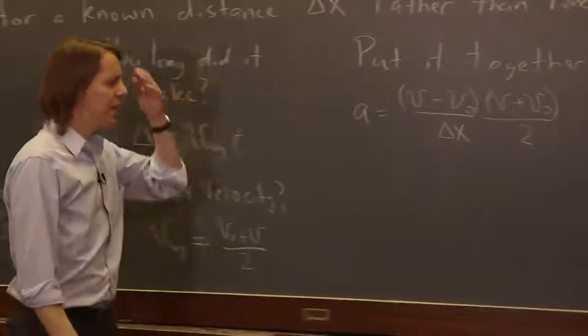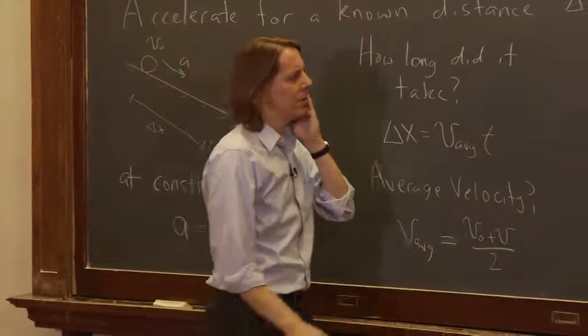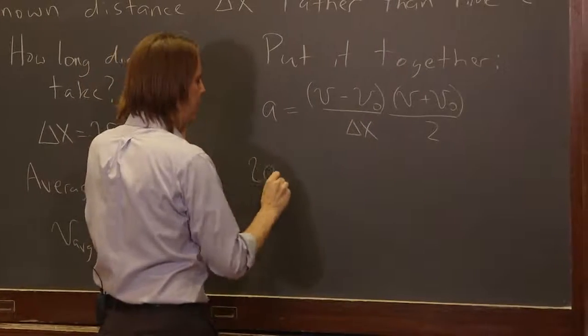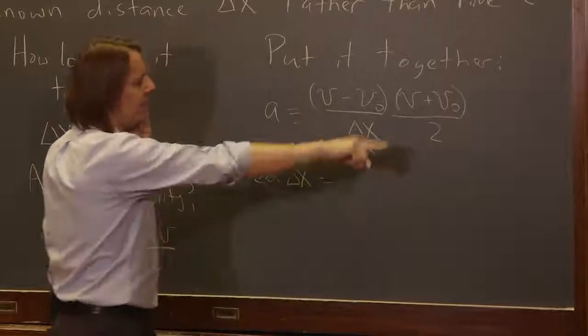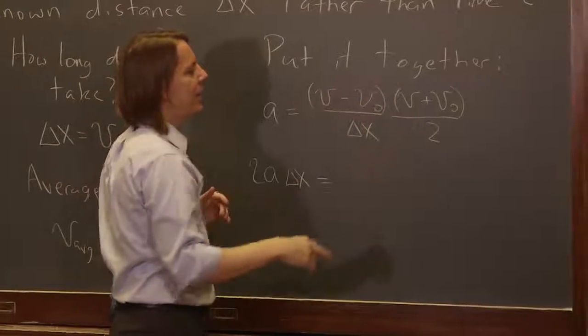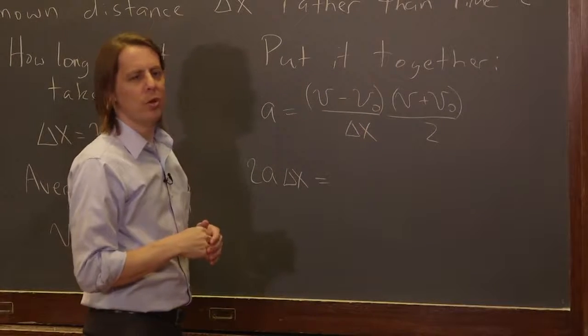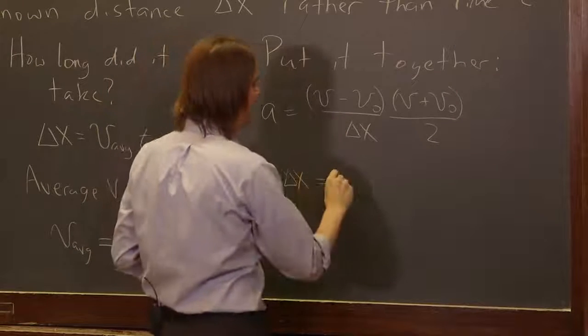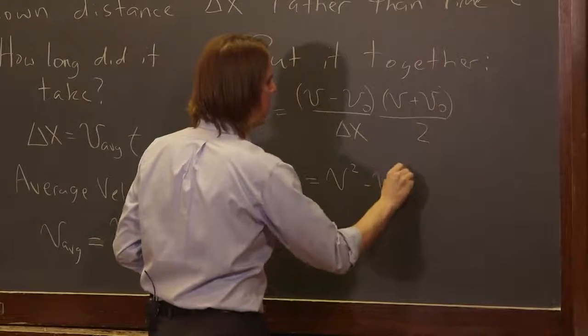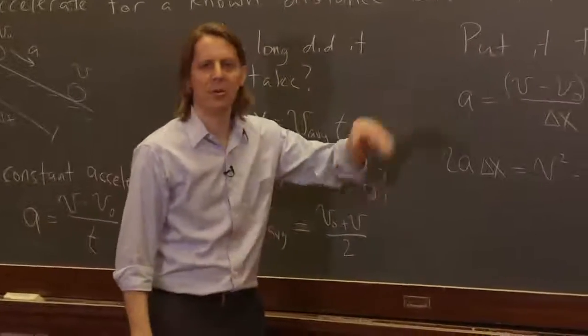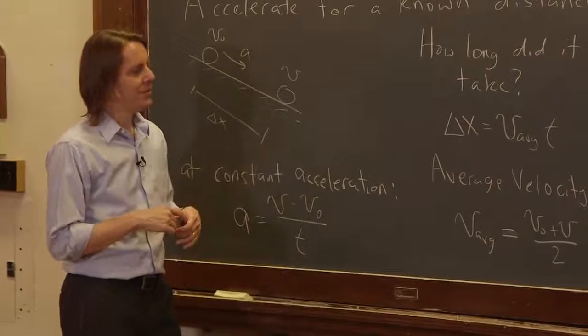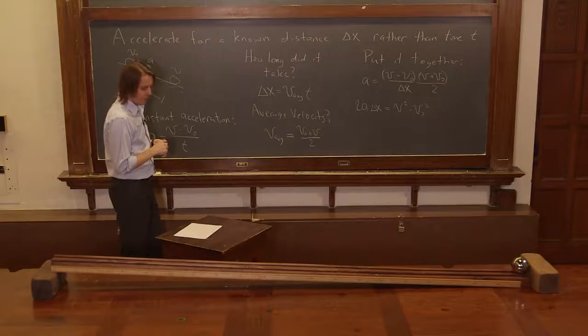If those, that times that. And then you start to see something interesting here. We can bring the 2 and the delta x over here. So we have 2a delta x. And then we have sort of a minus b times a plus b. That's the difference of two squares, if you remember from your algebra. So this is actually equal to v-squared minus v-naught squared. And if you don't believe me, do the FOIL method. First, outer, inner, last. But the cross terms cancel and you have v-squared minus v-naught squared.